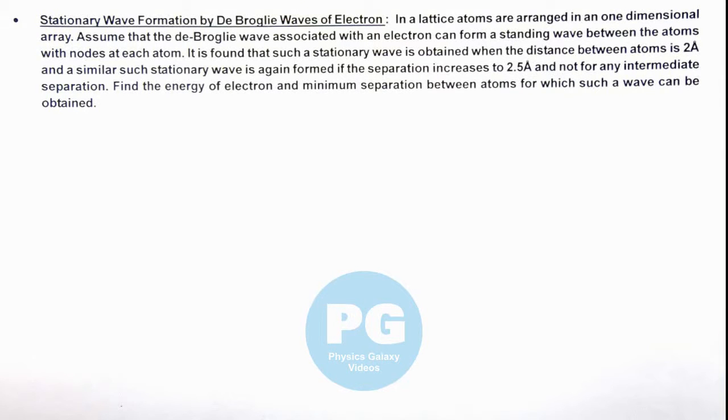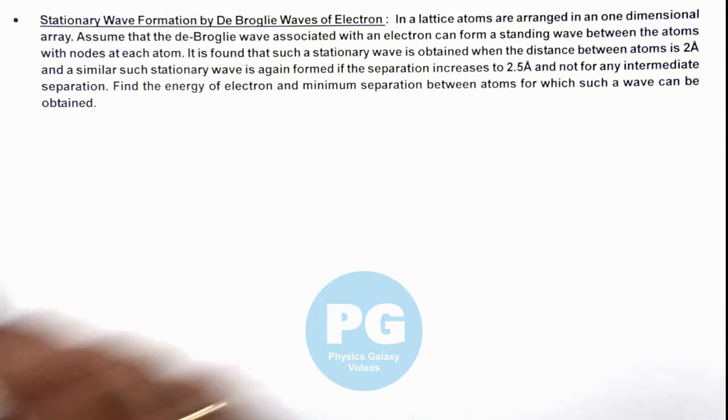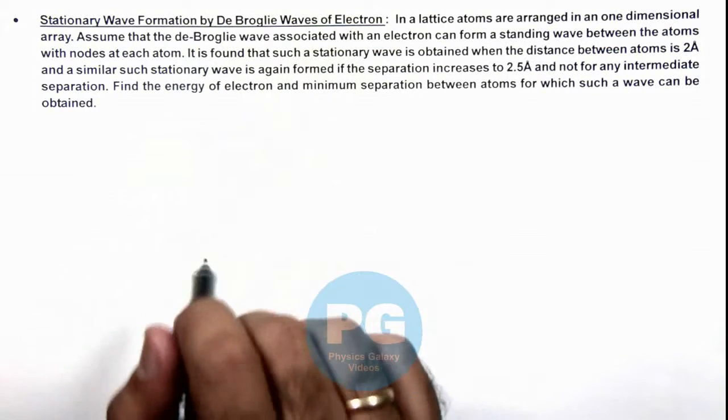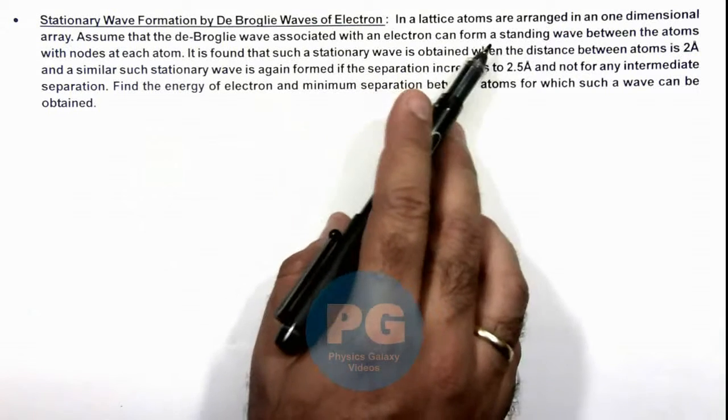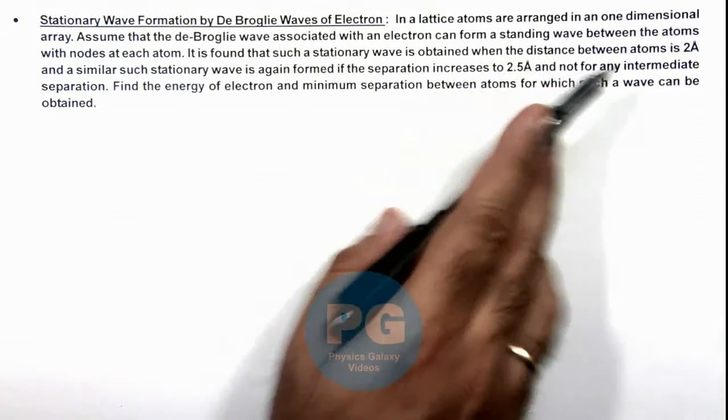In this illustration, we'll discuss stationary wave formation by de Broglie waves of electrons. We are given a situation where, in a lattice, atoms are arranged in a one-dimensional array.